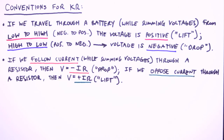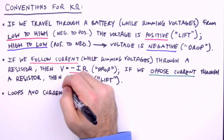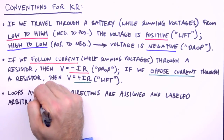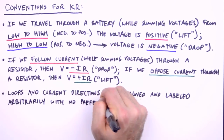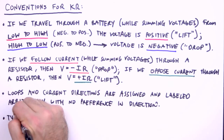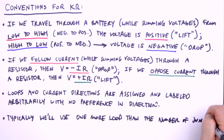A lot has been said about the directions of currents and loops — how are these directions initially decided? This is the best part: the directions of loops and currents are assigned and labeled arbitrarily, with absolutely no preference in direction. So long as the circuit is correctly analyzed using Kirchhoff's rules, the actual direction of positive charge flow will be revealed in the results. One final convention: typically we'll use one more loop than the number of junctions in the circuit, so be sure to have enough loops labeled before applying Kirchhoff's rules.